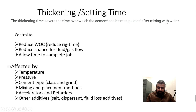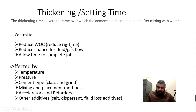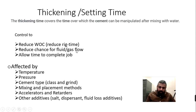Thickening time covers the period over which cement can be manipulated after mixing with water — in simple words, the time from when you add water until the cement becomes hard. We control it to reduce rig time by drying cement faster, and to reduce the chance of fluid or gas flow, since the sooner it sets the less chance gas has to migrate.